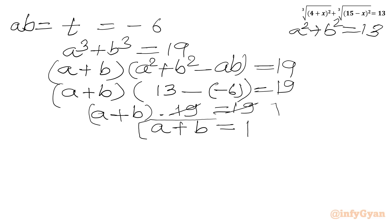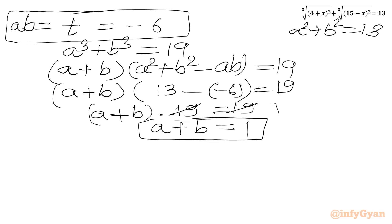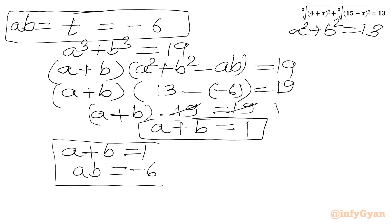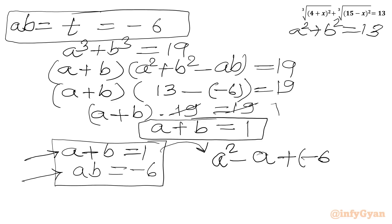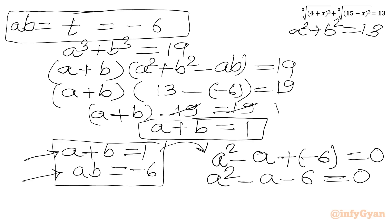Now we have a + b = 1 and ab = −6. I can form a quadratic whose roots are a and b: a² − (sum of roots)a + (product of roots) = 0, which gives a² − a − 6 = 0.